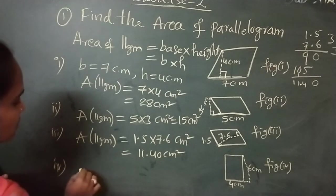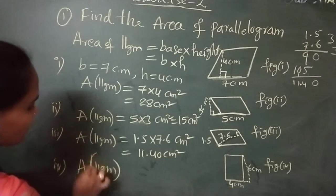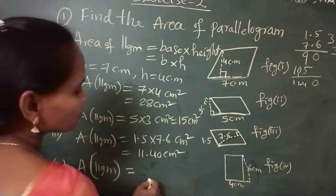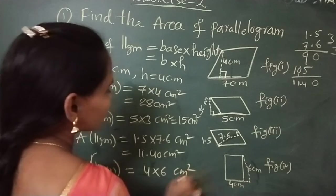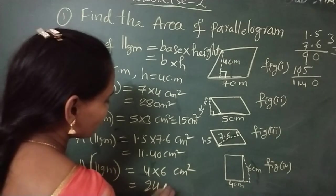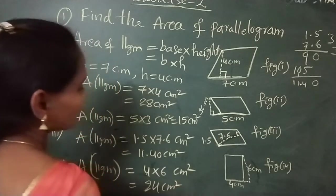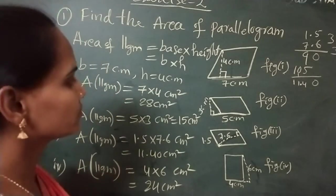Now, fourth one. Area of parallelogram equals base into height, 4 into 6 centimeters square. Directly I am writing, so 24 centimeters square. These are the areas of the parallelograms given. When they give you the question 'find the area of parallelogram,' you can use the formula base into height.